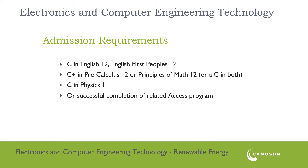The program admission requirements are listed on the screen. If you don't have those admission requirements, you can apply to join our related access program. There is an Electronics and Computer Engineering Technology access program that can take students who have grade 10 equivalents and upgrade their math, their English, and their physics as necessary, in order that you meet the program admission requirements.